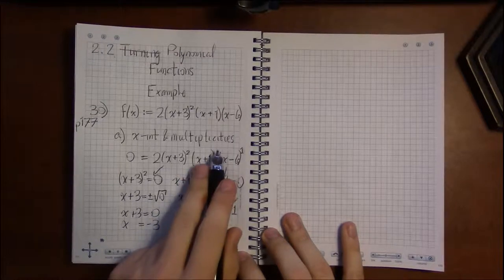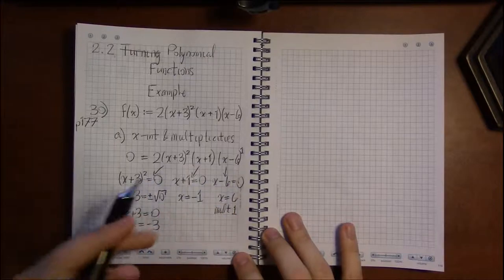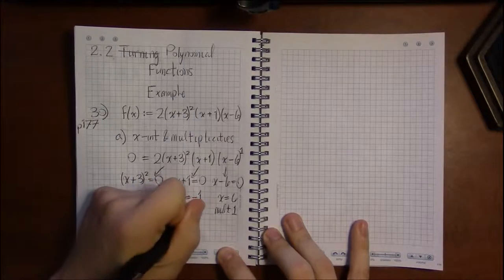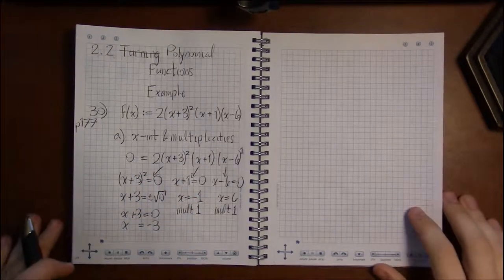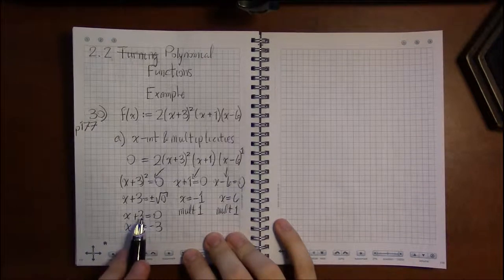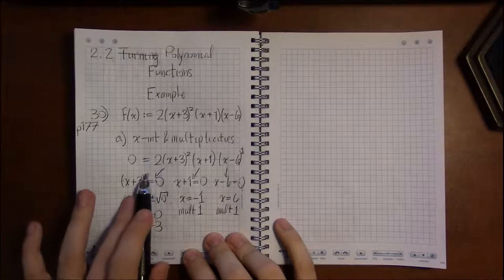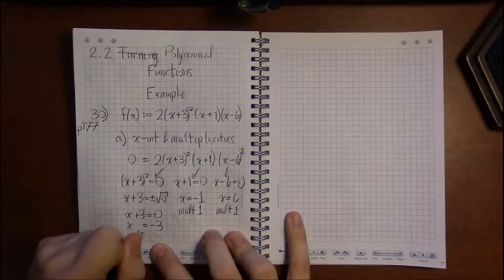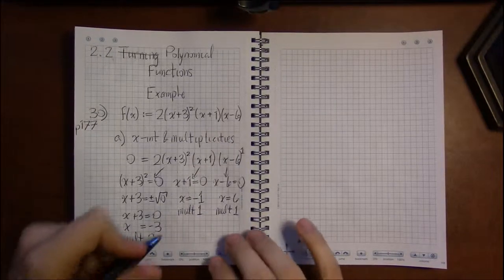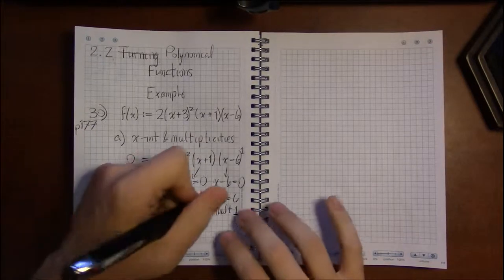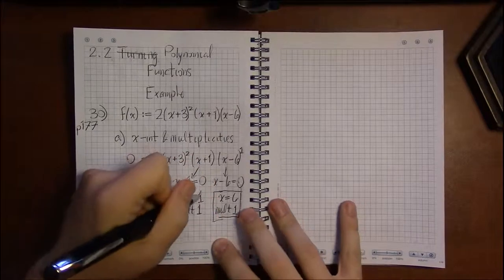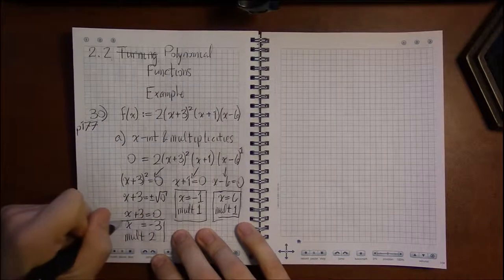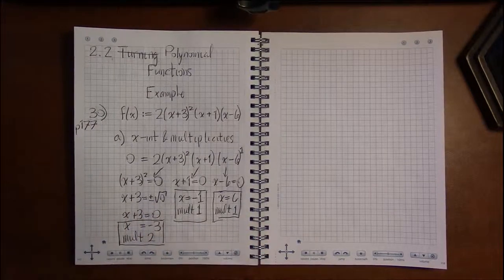Now for the multiplicity of minus 1. Go back. That came from here. No exponent. It must be 1, as with the 6, and the exponent is the multiplicity. Now we do it with the minus 3. Take our steps back. Our exponent is 2. So the multiplicity of minus 3 is 2. So that's our answer for part A: we have an x-intercept at 6 with multiplicity 1, at minus 1 with multiplicity 1, and at minus 3 with multiplicity 2.